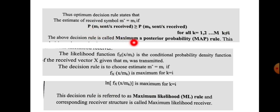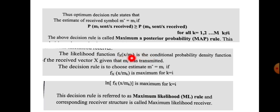This decision rule is called the maximum a posteriori (MAP) probability rule. The likelihood function is defined as fx(X | Mk), which is the conditional probability density function of the received vector X given that message Mk was transmitted. The MAP decision rule selects the message Mi that maximizes this posterior probability.